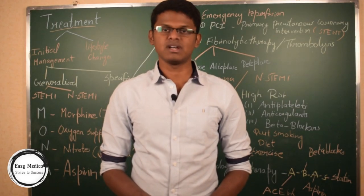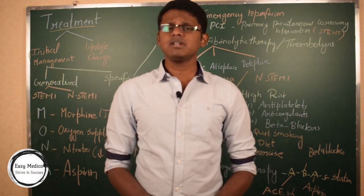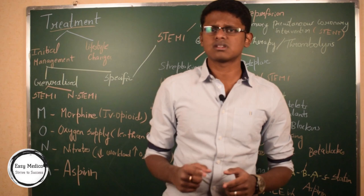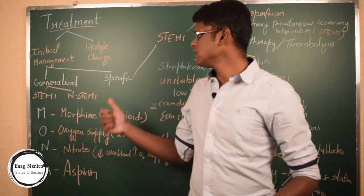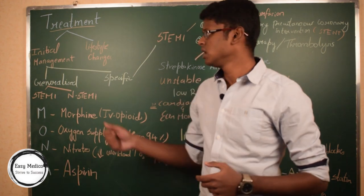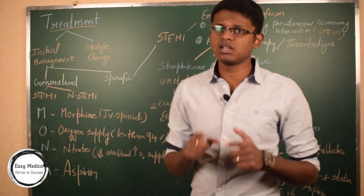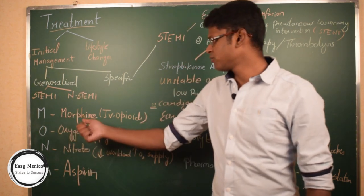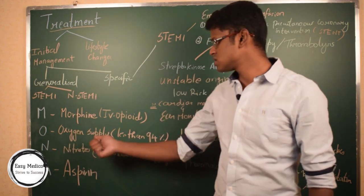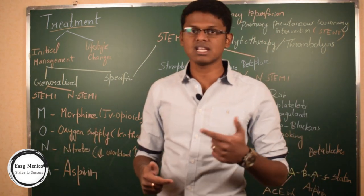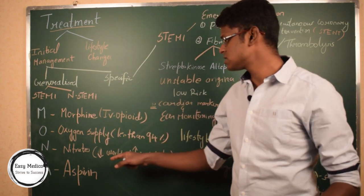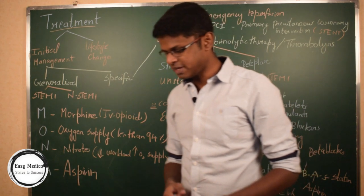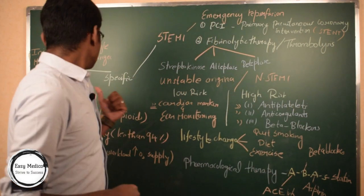Now we are coming to the end of the video — treatment. Treatment can be classified into two main categories: initial management and lifestyle changes. In initial management, it is further classified into generalized and specific treatment. For generalized treatment, whether it is STEMI or non-STEMI, remember the mnemonic MONA: M is Morphine given as IV opioids; O is oxygen supply when the patient's oxygen saturation is less than 94%; N is nitrates, given to decrease workload and increase oxygen supply; and A is aspirin.